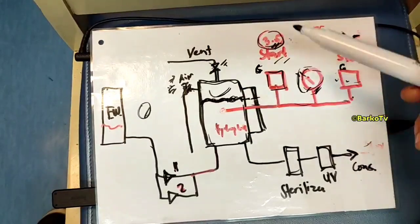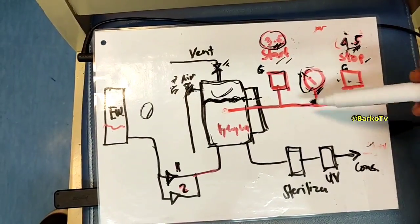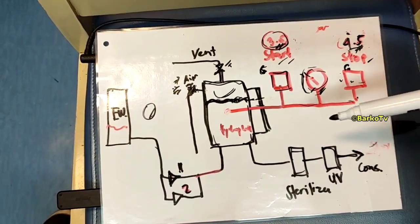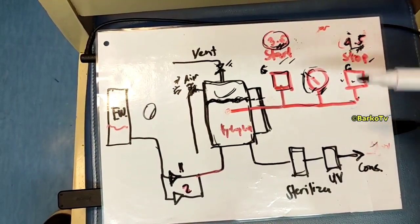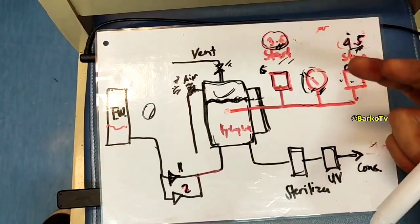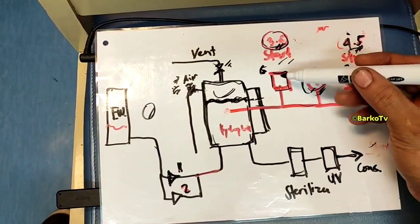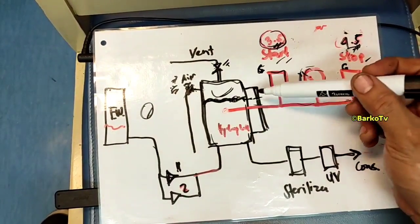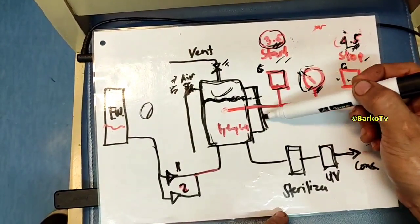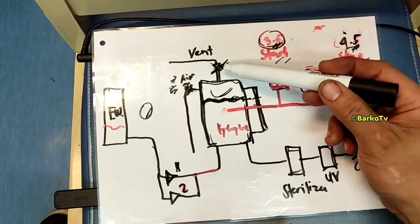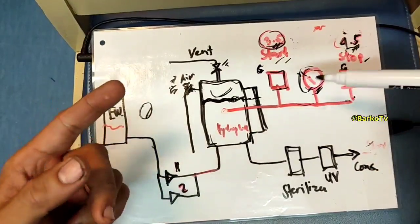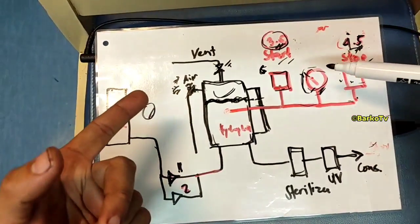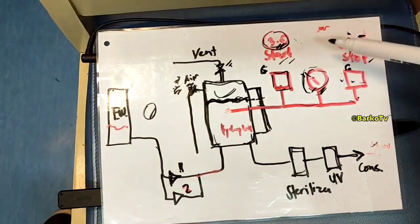Unlike other designs that use only one differential pressure switch, this system has two separate pressure switches. This is the level gauge. Now let me show you how to simulate and troubleshoot this system.